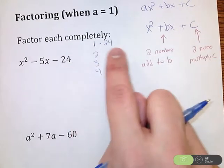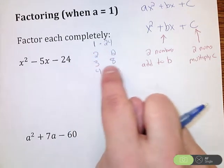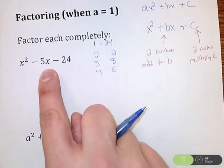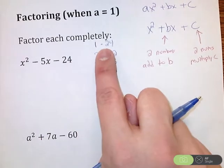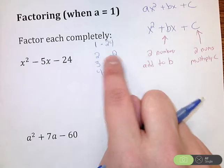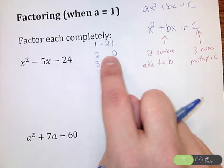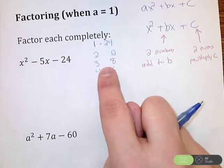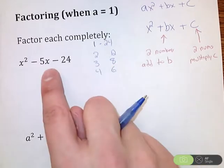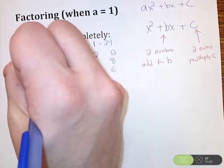The next thing I'm looking for is can I somehow combine one of these pairs to make a negative 5? So 1 and 24 is pretty far apart. 2 and 12, that's about 10 apart, so that's not going to get me there. 3 and 8 is about 5 apart, so let's look at 3 and 8.